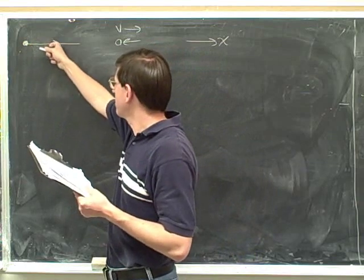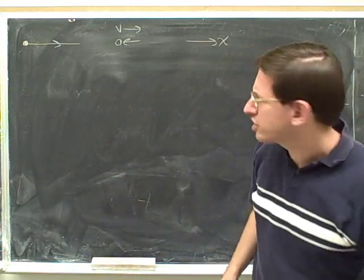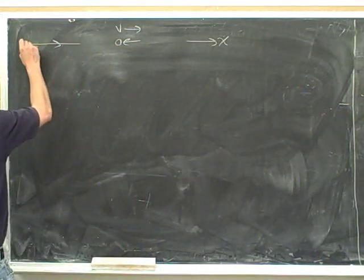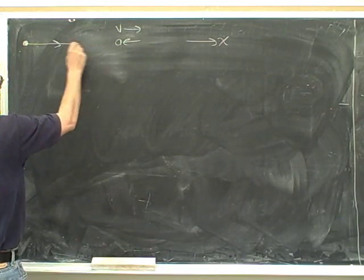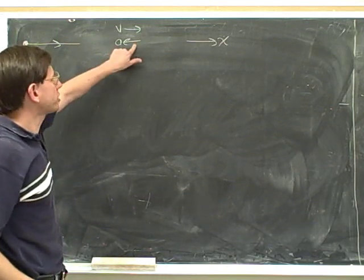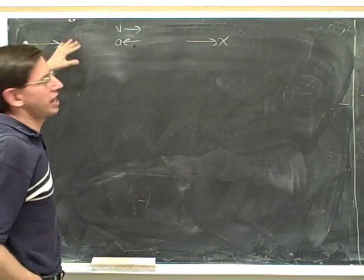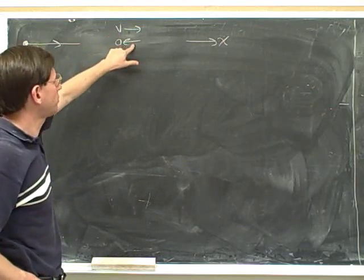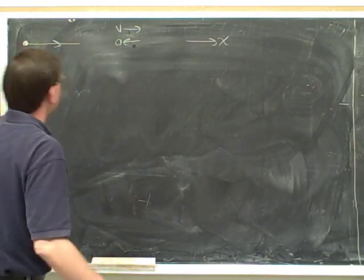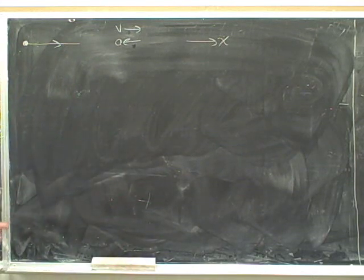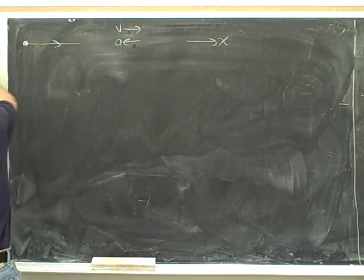We're moving to the right slower and slower and slower. Eventually the object reverses direction. If we're moving to the right but going slower and slower, eventually there's going to come a point where we're motionless for an instant and then we start moving to the left. If we continue to accelerate to the left for long enough, we're going to have to start moving to the left. So originally moving to the right, but since we're accelerating to the left, we'll have less and less speed until for an instant we're motionless.